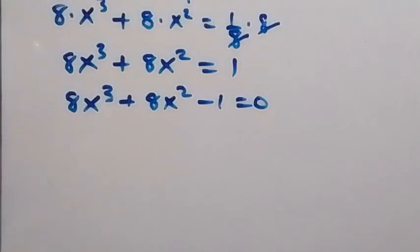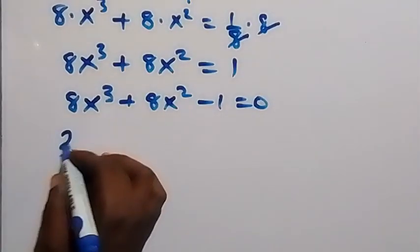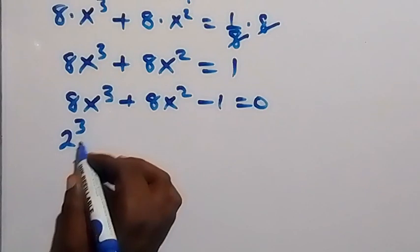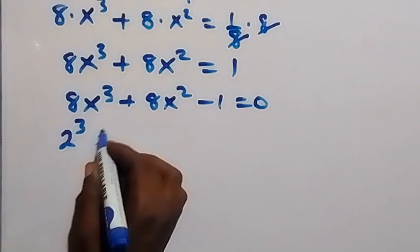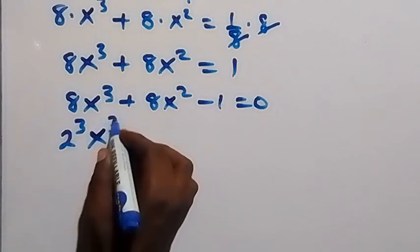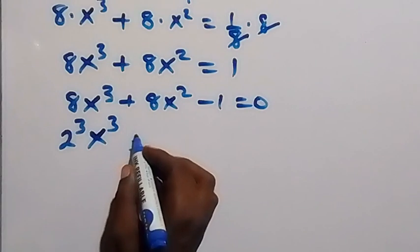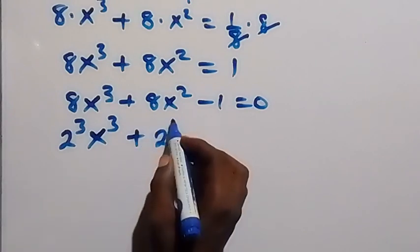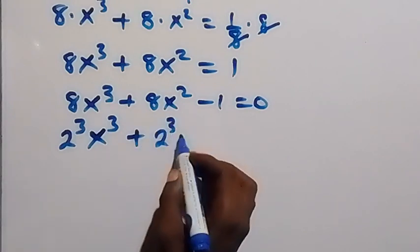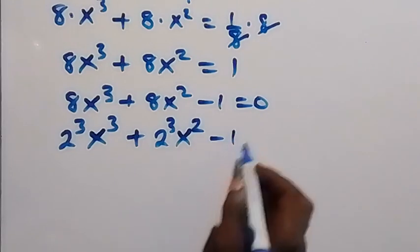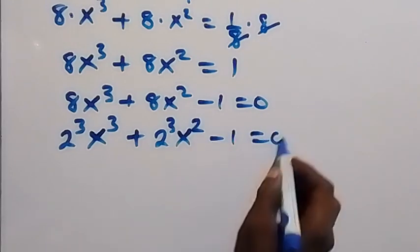In the next step we can write 8 as 2 raised to the power 3, that is 2 times 2 times 2. Then multiply by x raised to the power 3, plus 2 raised to the power 3 as well, then x raised to the power 2 minus 1 equals to 0.